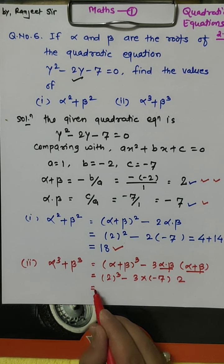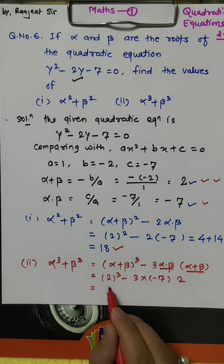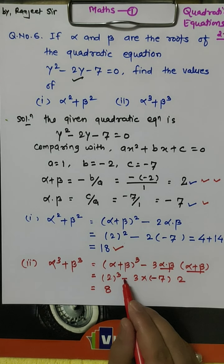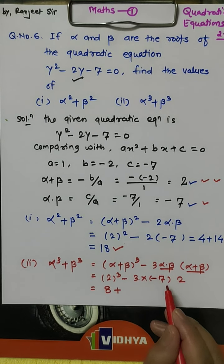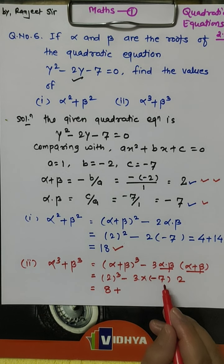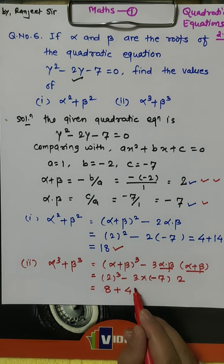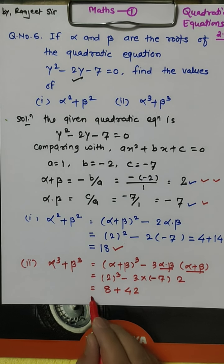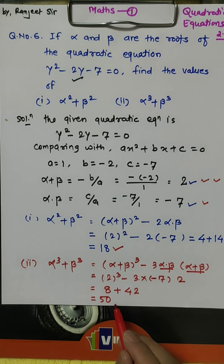So this becomes 2 cubed, minus 3 times minus 7, times 2. 2 cubed is 8. The minus times minus becomes plus: 3 times 2 is 6, and 6 times 7 is 42. So 42 plus 8 is 50. Alpha cubed plus beta cubed is equal to 50.